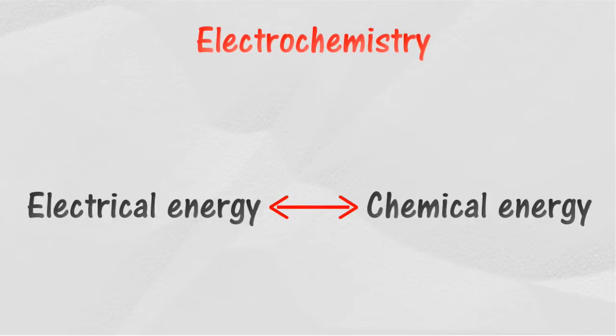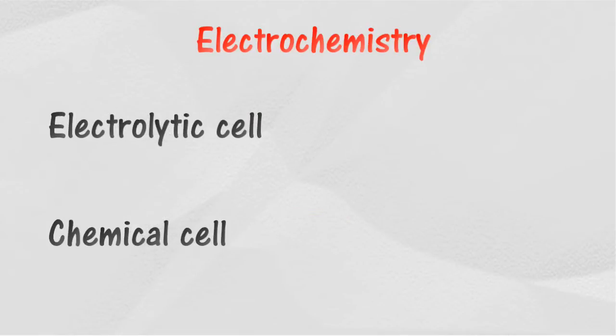Electrochemistry is the conversion of electrical energy into chemical energy and vice versa. If you can follow the flow of electrons in chemical reactions, then you will know what electrochemistry is. Electrochemistry involves electrolytic cells and chemical cells.